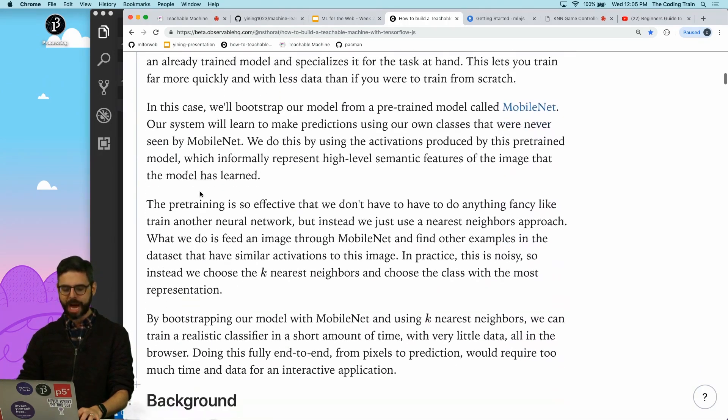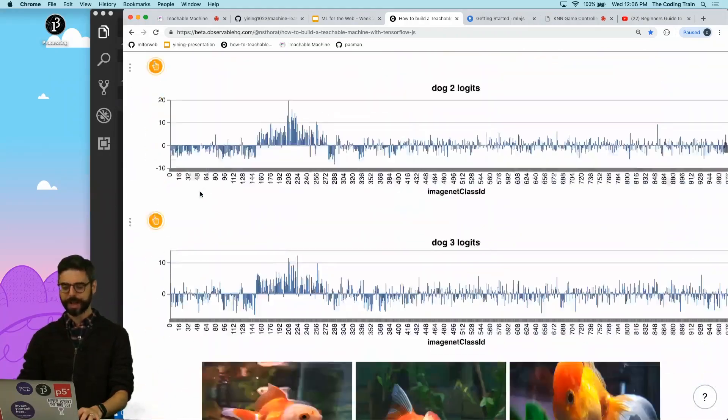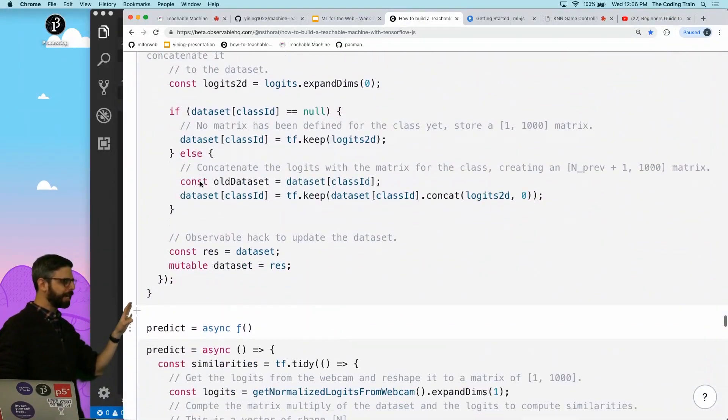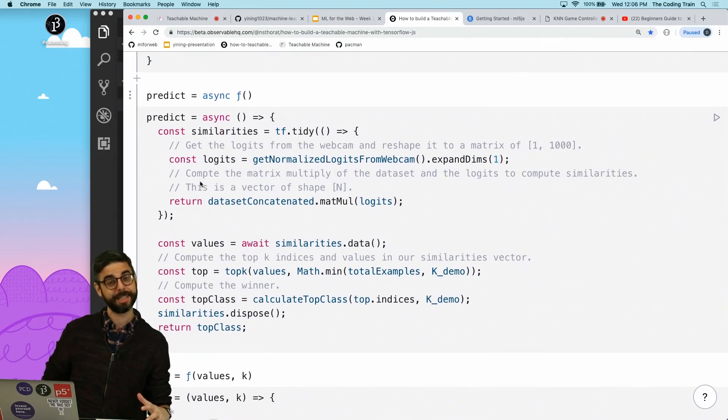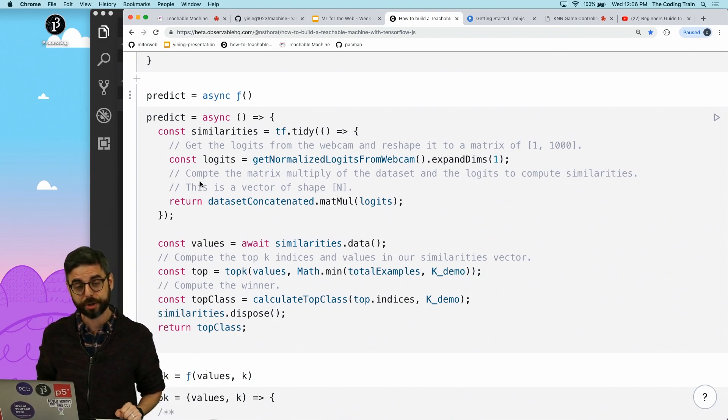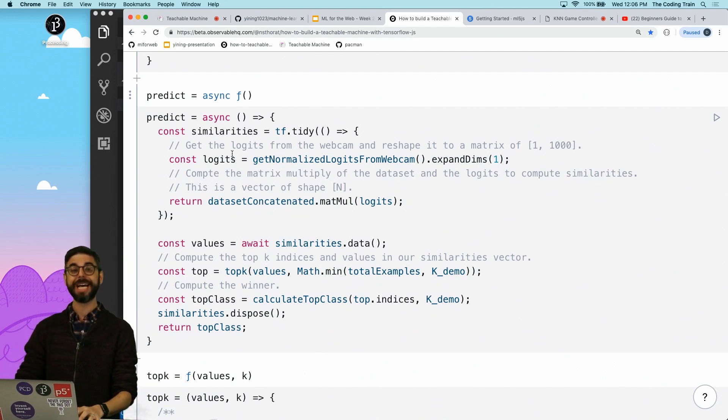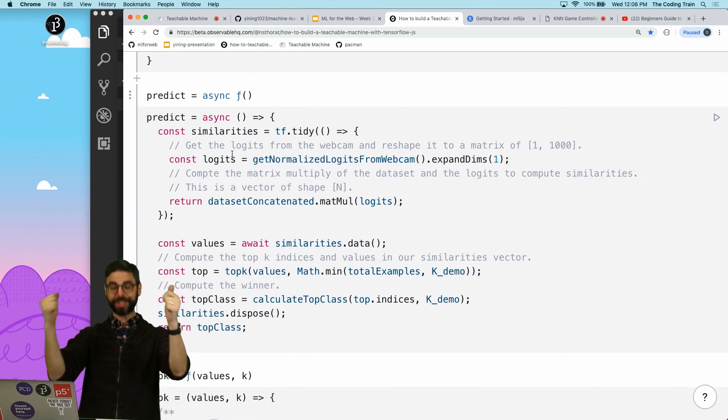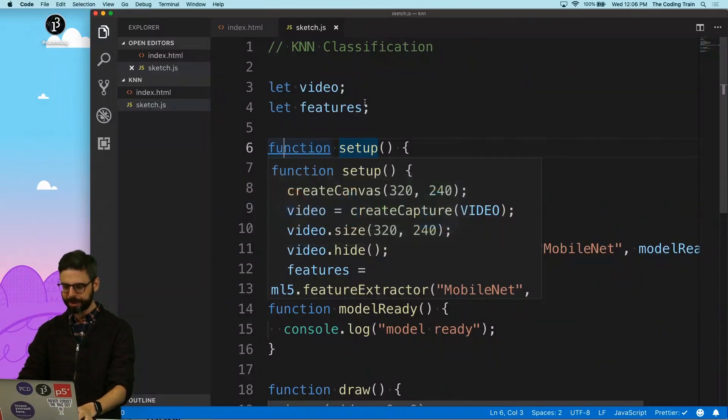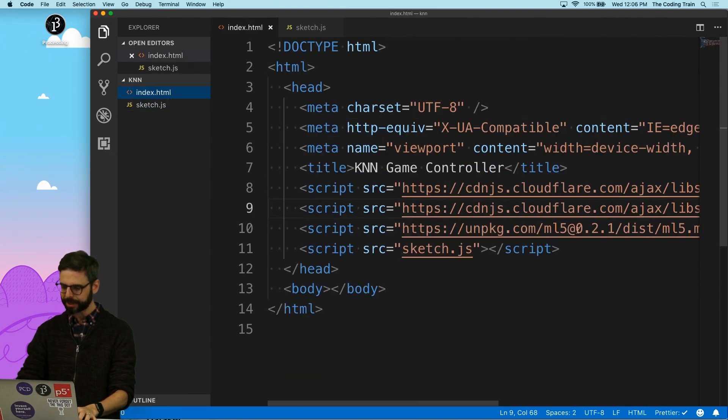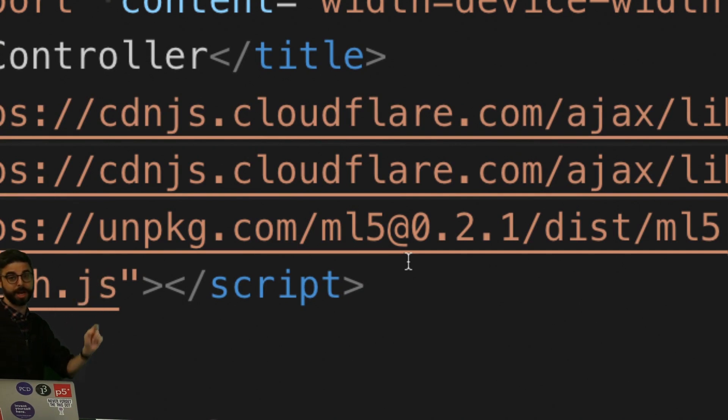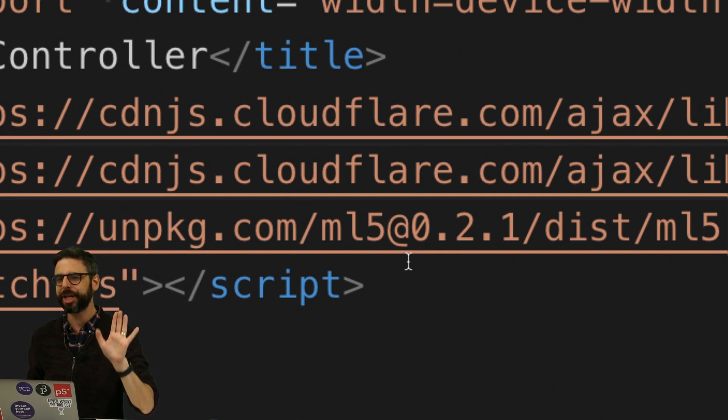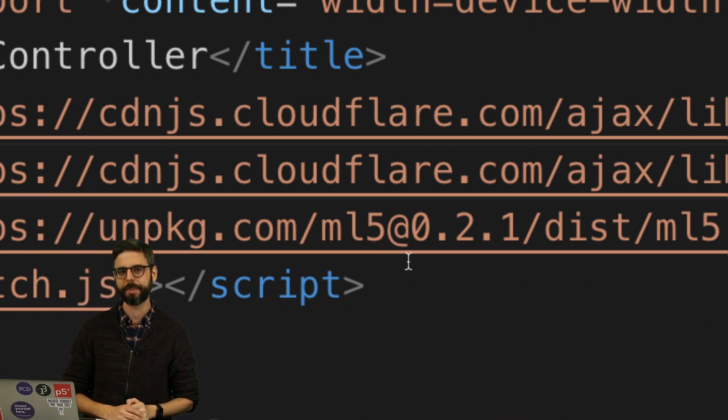What I'm going to actually follow is this article written by Nikhil Thorat, who is one of the creators of TensorFlow.js, one of the members of the research team at Google Brain. This is a notebook about how all of this stuff works. I'm going to basically go through this, but not use the code here. I'm going to use the new ML5 KNN classifier feature.